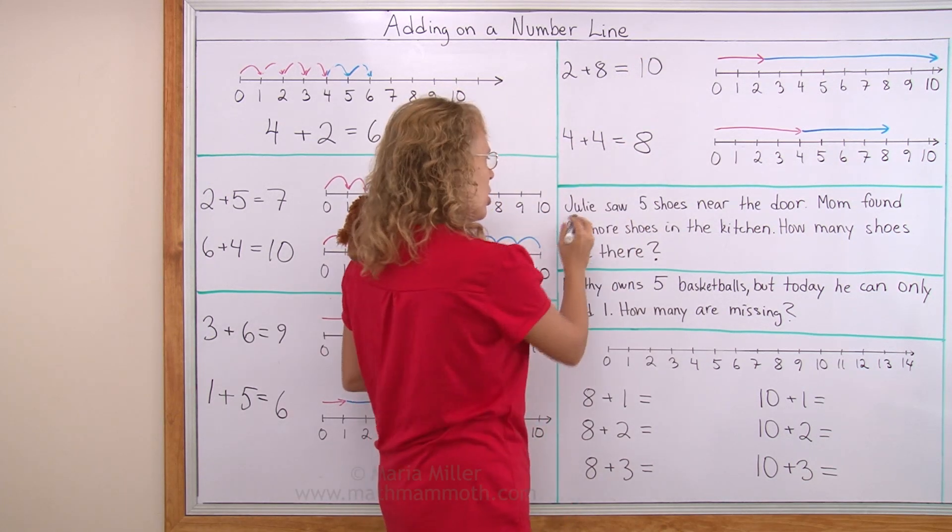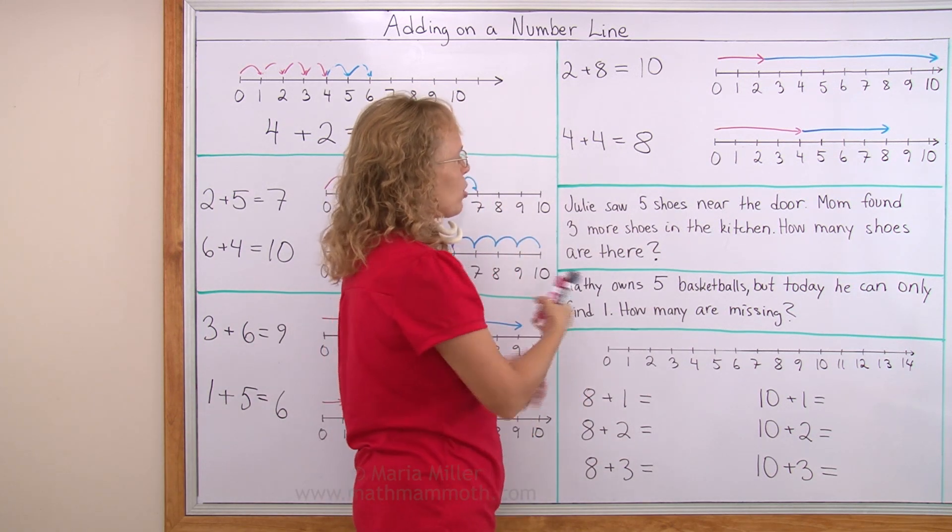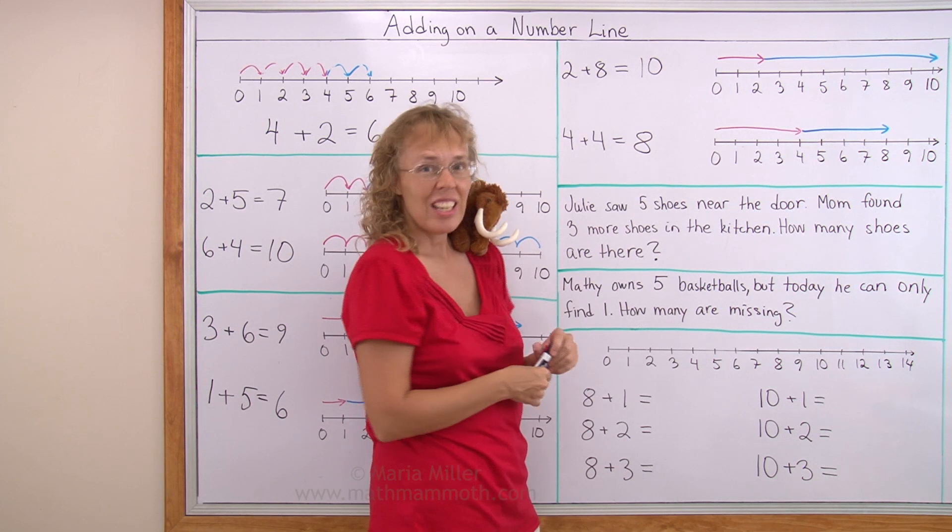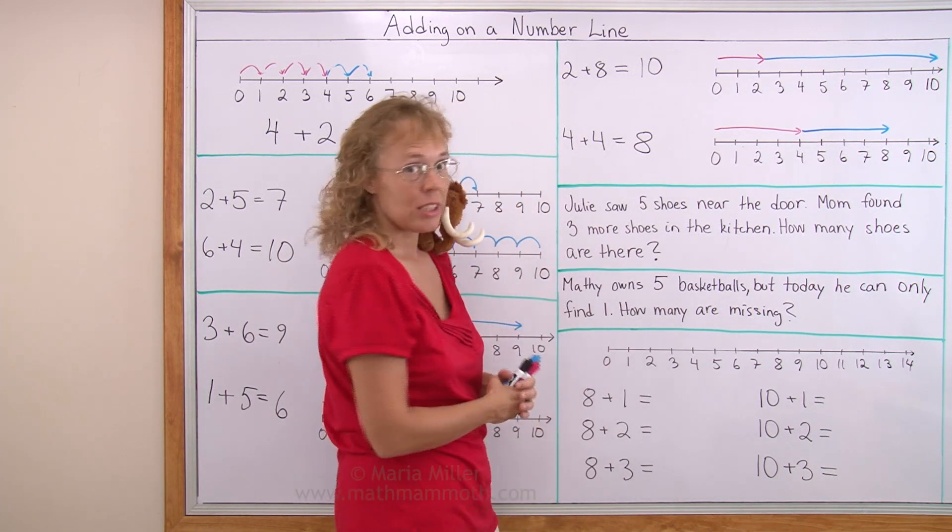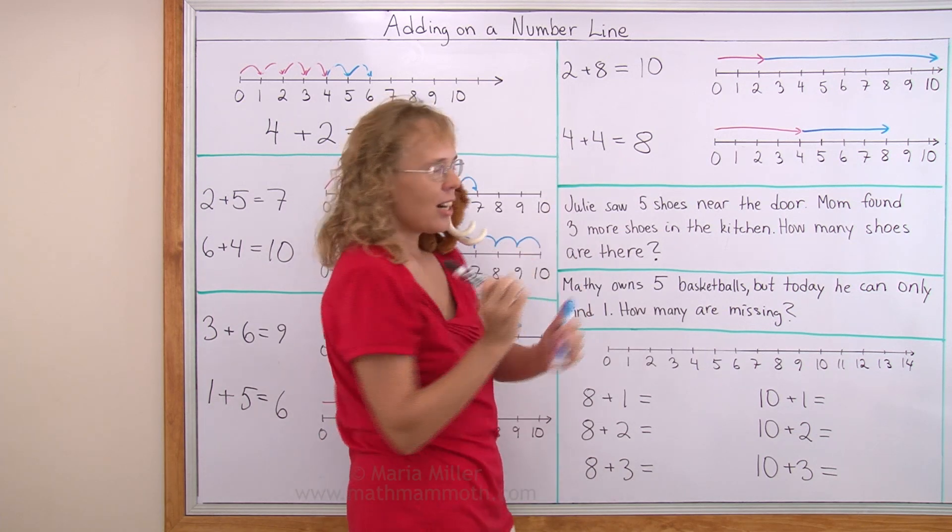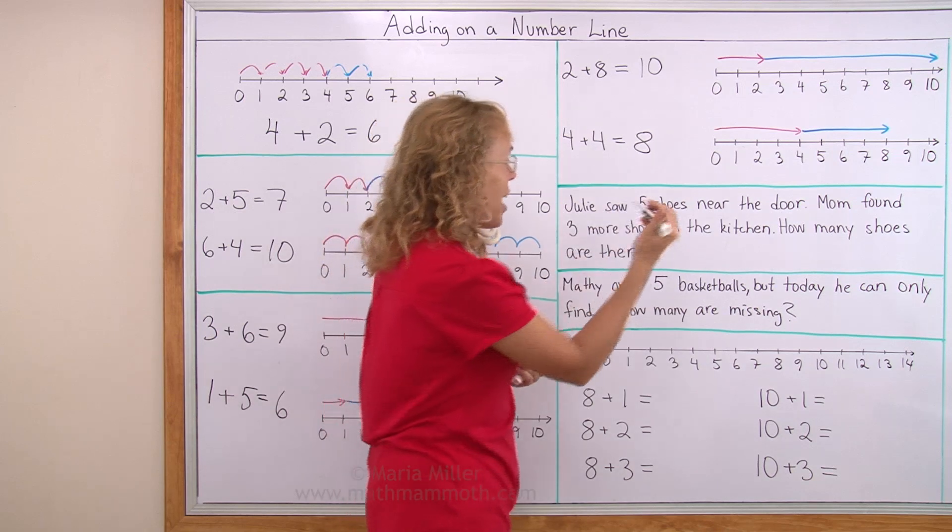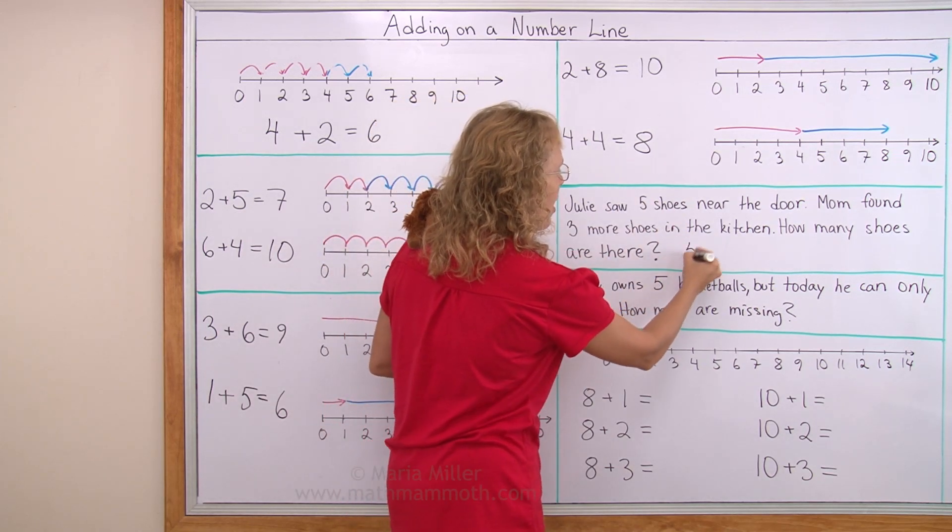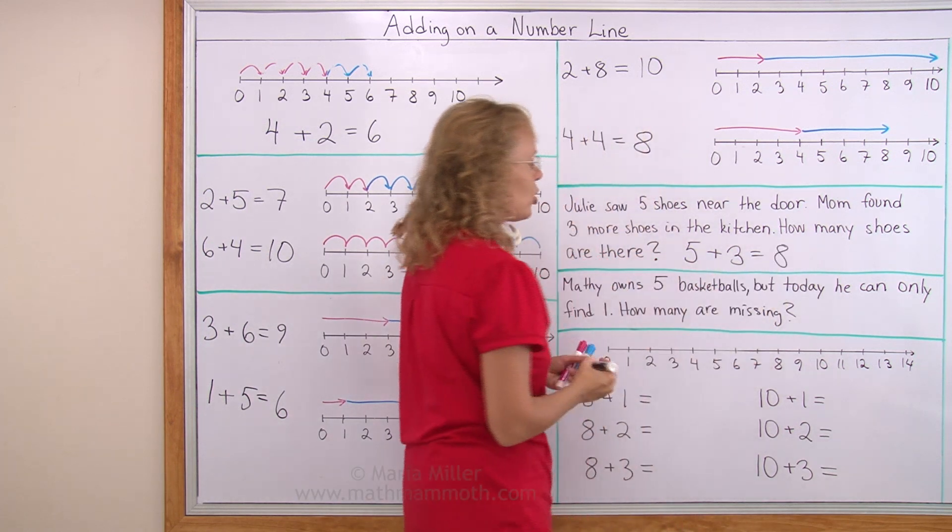Now some word problems. Julie saw 5 shoes near the door. Mom found 3 more shoes in the kitchen. Does that ever happen in your house? Shoes are scattered. How many shoes are there in total? 5 near the door, 3 in the kitchen. So we can add. I will write an addition. 5 plus 3 equals 8. 8 shoes in total.